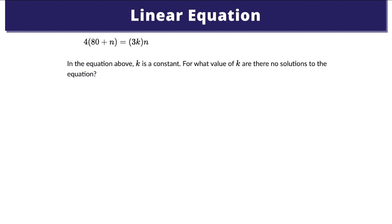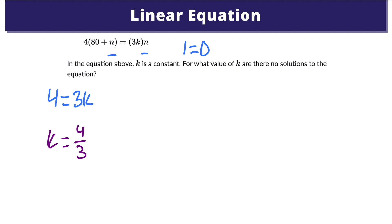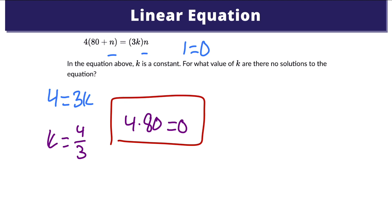Here's our third example. The first thing to think about is that there will be no solutions if the n terms on the left cancel with the n terms on the right. That would produce a false statement such as 1 equals 0, which we know is not true. This will only happen in this problem if 4 is equal to 3k. If you isolate for k, we get k equals 4 thirds. The n terms will cancel, and that leaves us with a false statement. So k equals 4 thirds is our answer — there are no solutions to this linear equation if k is equal to 4 thirds.